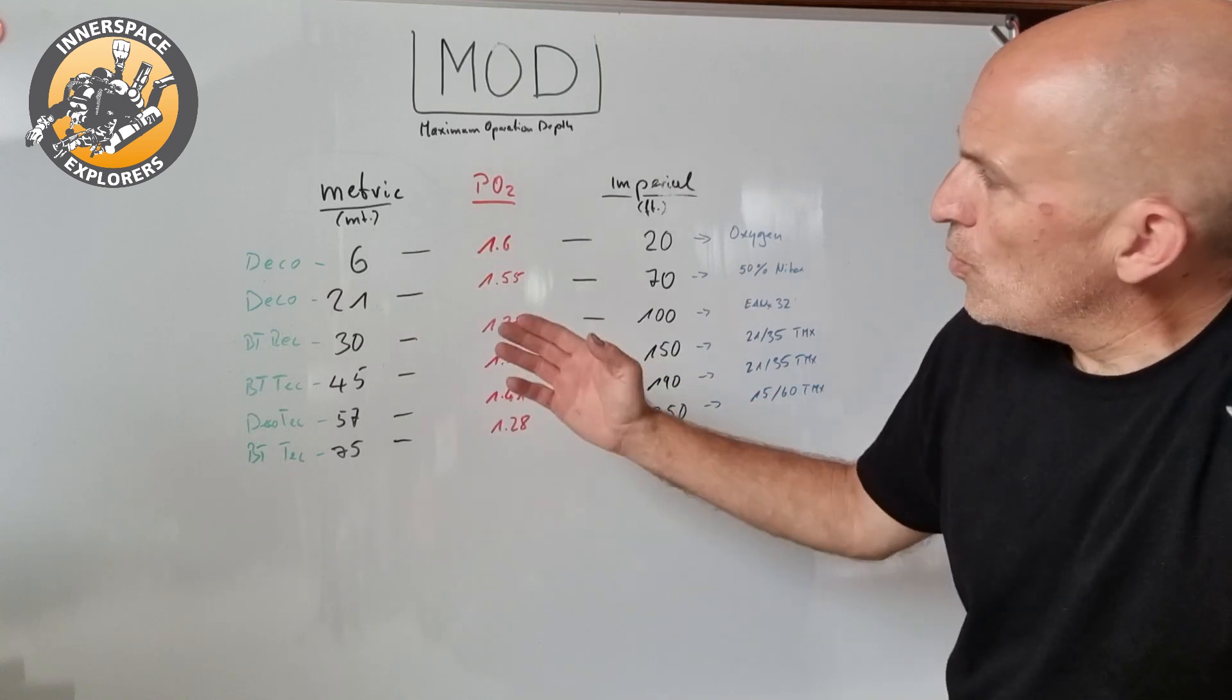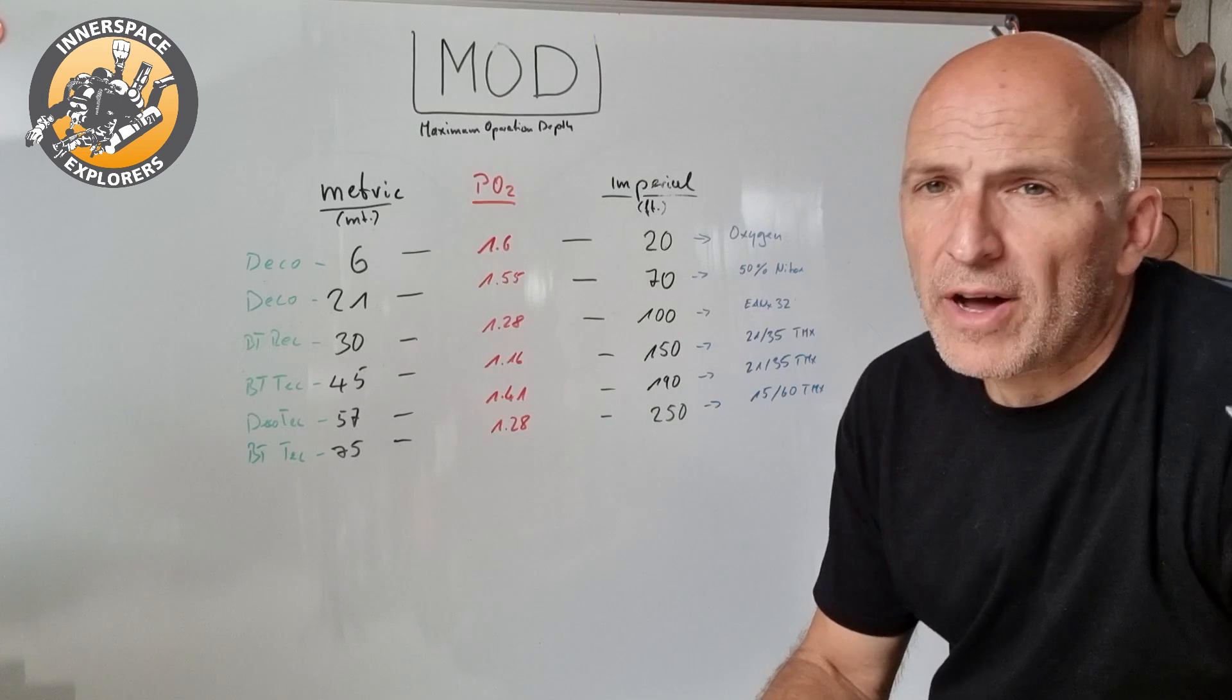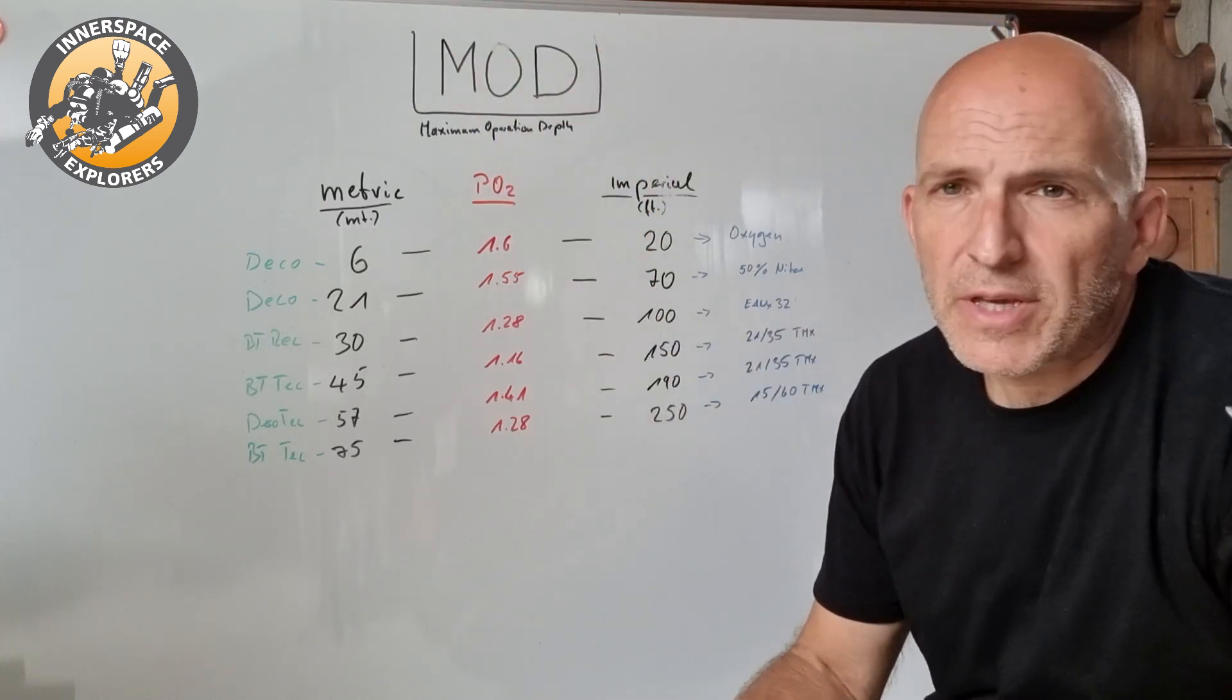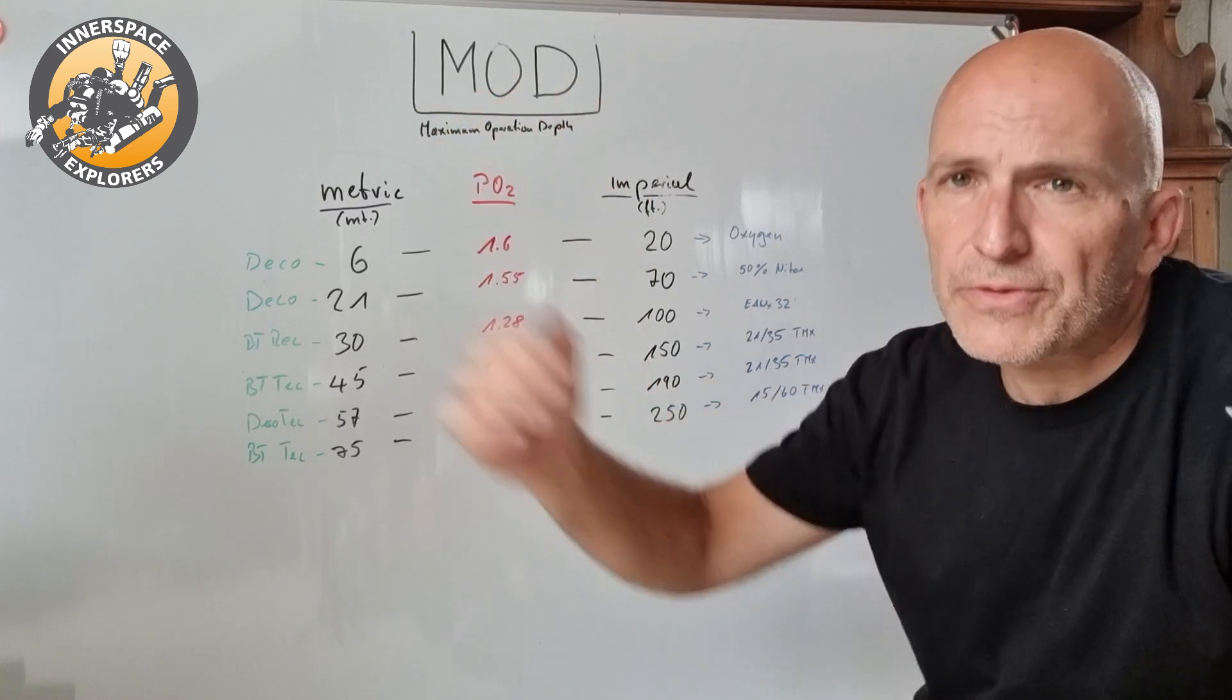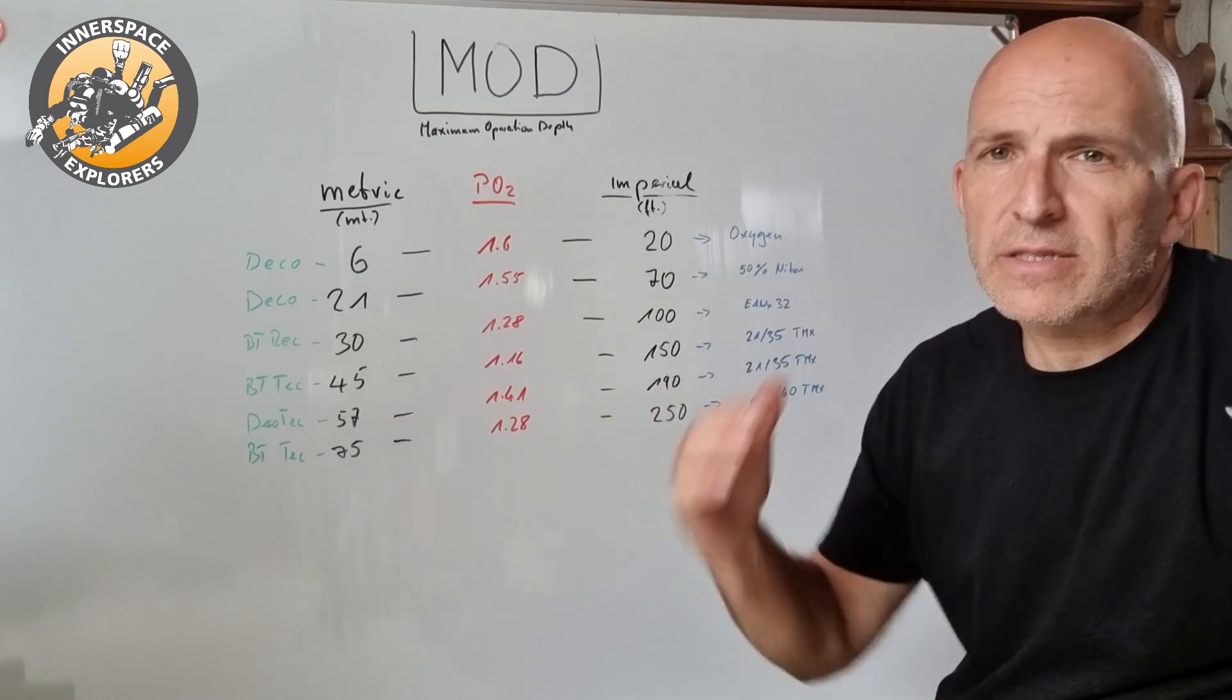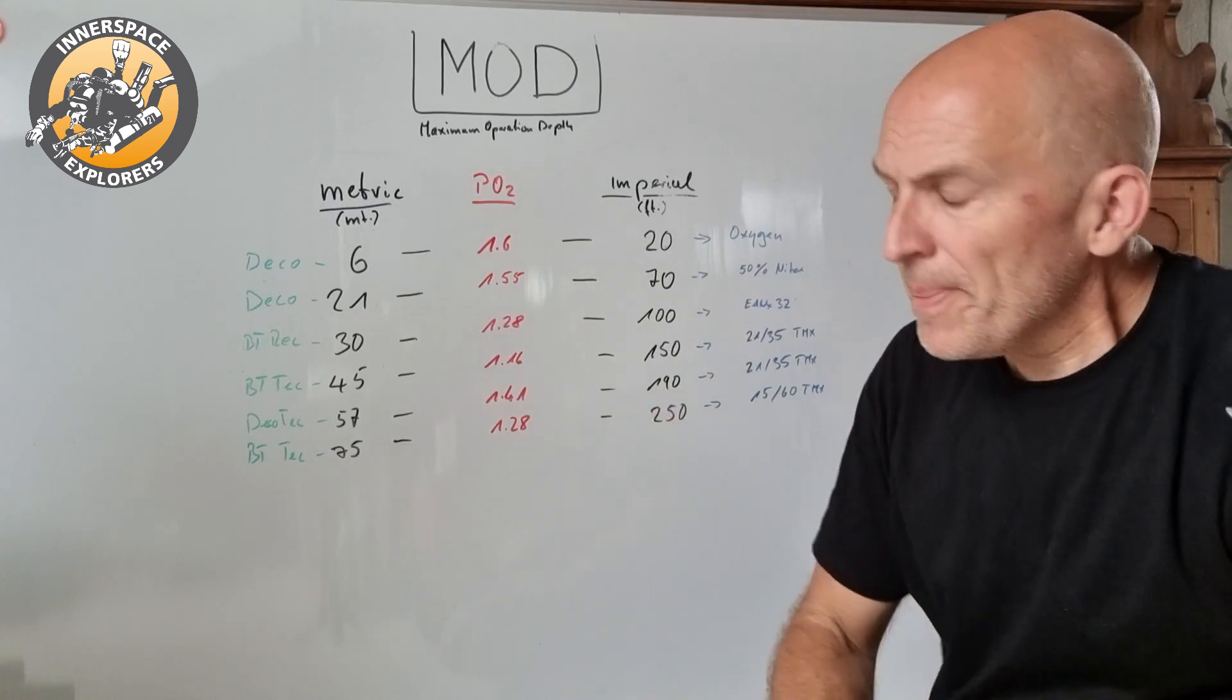The next gas would be Nitrox 50 and the tank would be labeled 21 meters or 70 feet, but already there it's 1.55, not 1.6 again. Of course that has something to do with the 3-meter increments that we have when we ascend. Think about it, you come up from 30, 27, 24, 21, 18, 15, 12, 6, 3. We stay in these 3-meter increments and obviously you want to match one of those. You don't do a gas switch at 22 meters or at 75 feet instead of 70 feet.